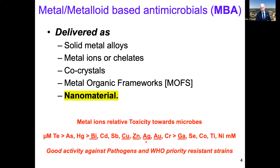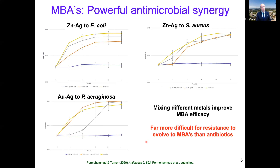It's nothing new to use metals as antimicrobials — they've been used since antiquity. The coinage elements copper, silver, and gold were used since ancient times; for example, mariners would throw silver coins into water barrels on ships to keep the water from fouling.